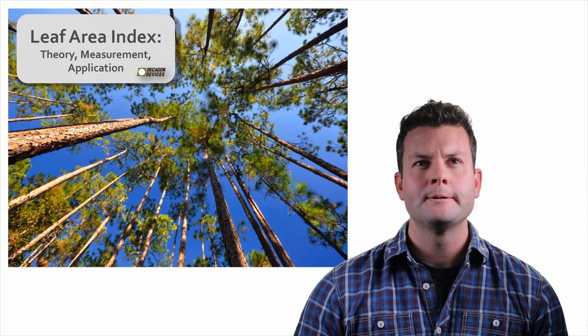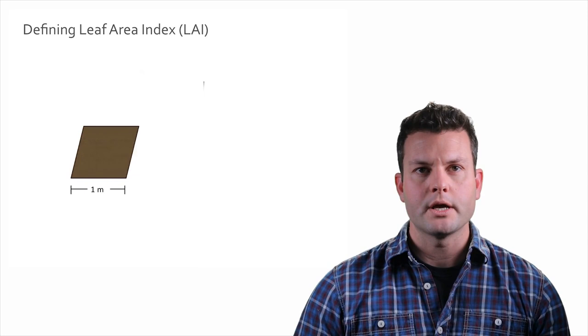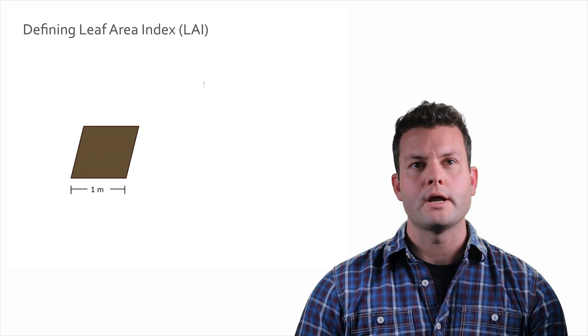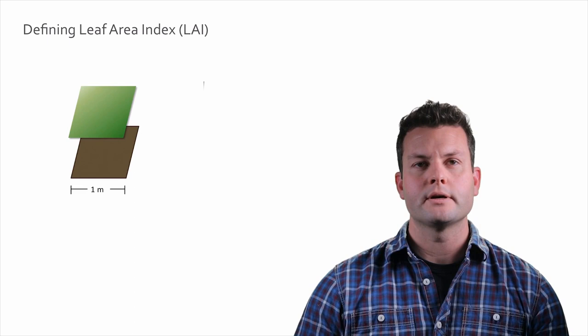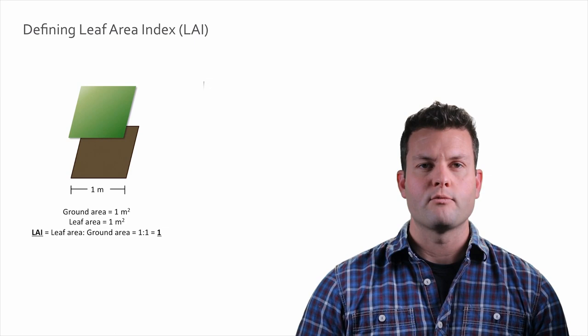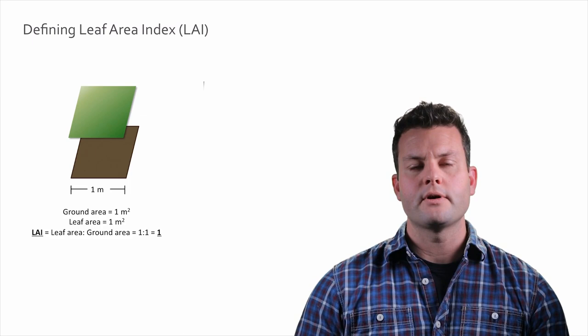I'd like to start by defining leaf area index to get us all on the same page. Imagine you have a plot out in the forest or in your crop — one meter on each side, so one square meter of ground area, with the entire area covered by a really big leaf. To calculate LAI, we know ground area equals one square meter and leaf area equals one square meter. LAI is the ratio of leaf area to ground area — in this case, one to one, so LAI equals one.